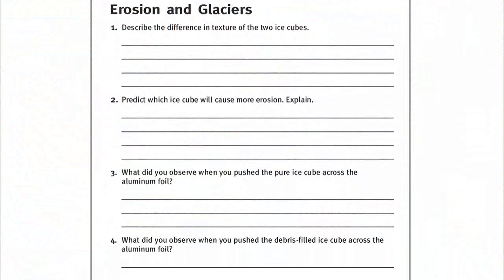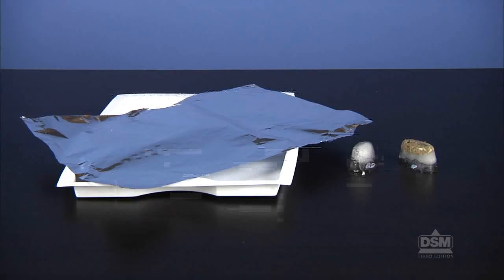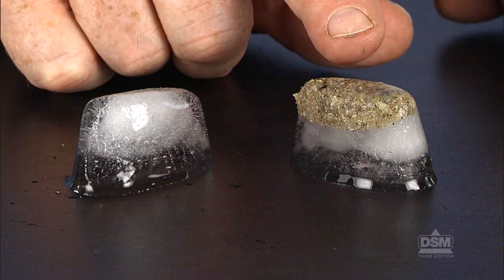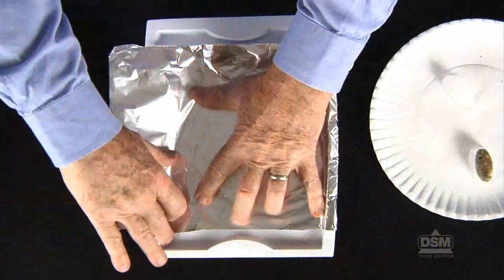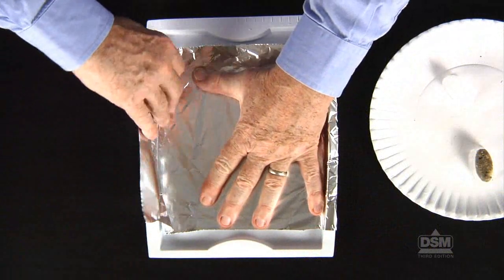Distribute a copy of Activity Sheet 12 to each student and the materials to each team. Have the students describe the difference in texture of the two ice cubes and record their observations on Activity Sheet 12. Students should predict that the cube containing debris is rougher and will cause more erosion.